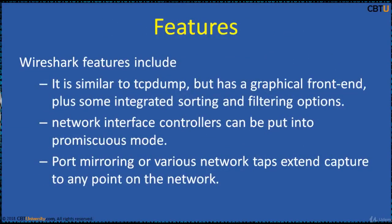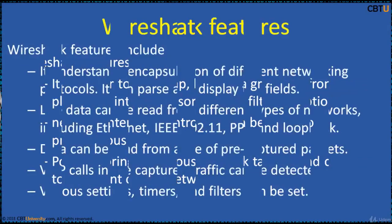Some of the Wireshark features are: it is similar to TCP dump but has a graphical front end, plus some integrated sorting and filtering options. Wireshark lets the user put the network interface controllers into promiscuous mode. This helps in seeing all the traffic visible on that interface, including unicast traffic not sent to that NIC's MAC address. Port mirroring or various network taps can extend capture to any point on the network.